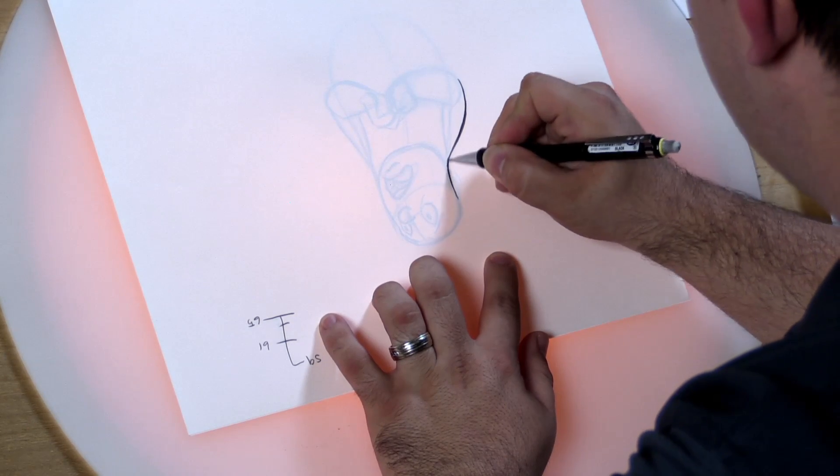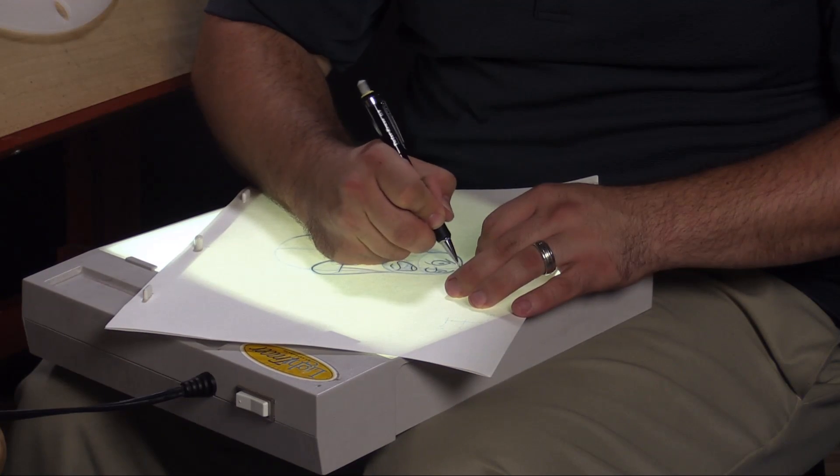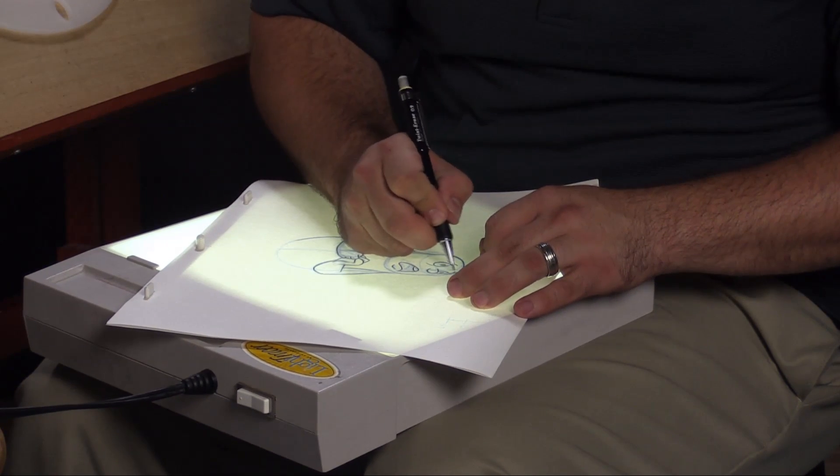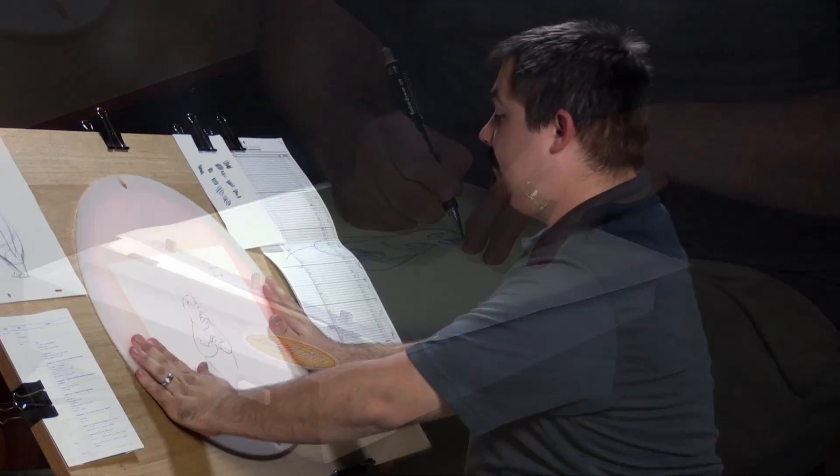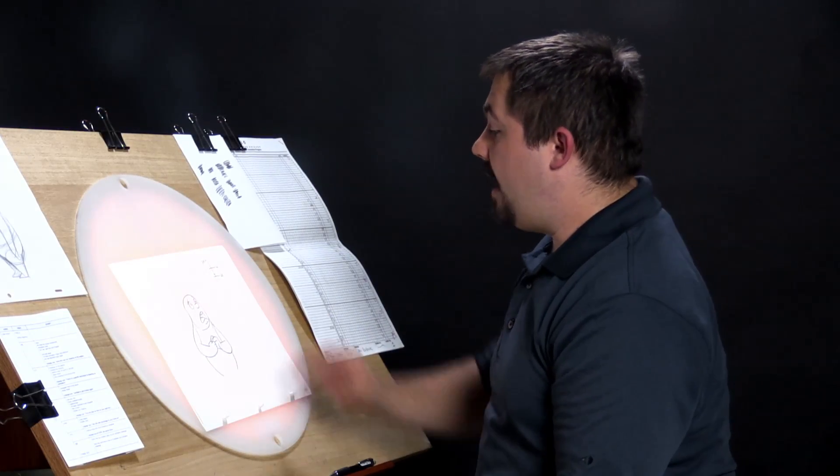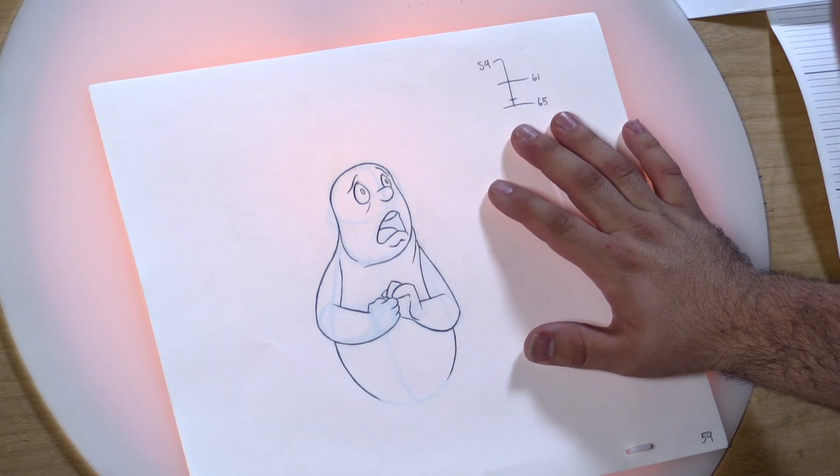Now you can do this on your light box at home. You can still turn your drawings on your animation peg bar and make that wrist action work. Now once you've hit all parts of the drawing, you'll have a nice cleaned up drawing with very clean lines and you'll be ready to move on to your next clean up drawing.